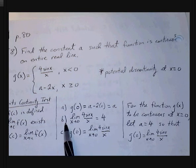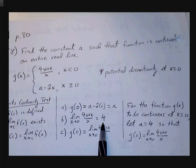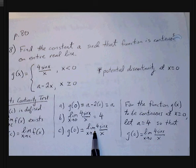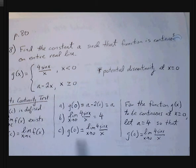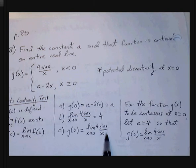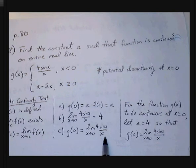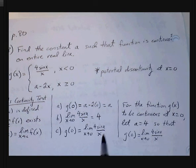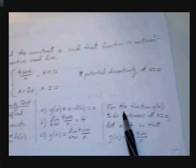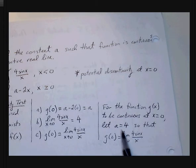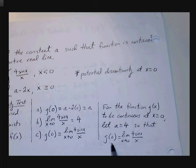For the second condition, the limit as x approaches 0 of 4 sine x over x equals 4, using the trig limit theorem we know. For the third condition, g(0) must equal the limit of 4 sine x over x as x approaches 0, which is 4. So for the function to be continuous at x equals 0, let a equal 4. If a equals 4, then g(0) equals the limit of 4 sine x over x as x approaches 0, and the third condition passes — guaranteeing a continuous function through x equals 0.